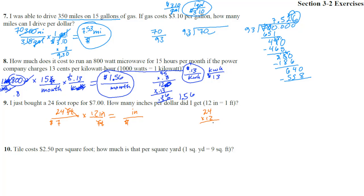Let's do 24 times 12: 2 times 4 is 8, 2 times 2 is 4. Move down to the second one: 0, 1 times 4 is 4, 1 times 2 is 2. Add them and we get 288. Now we have 288 divided by 7. 7 goes into 28 four times. 4 times 7 is 28. Subtract and we get 0. Bring down the 8.